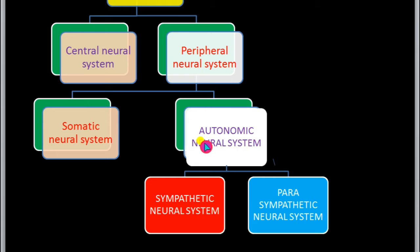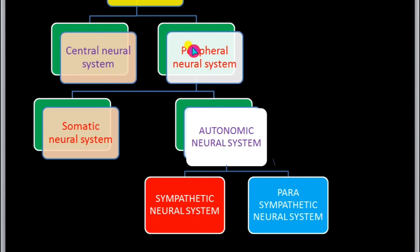As the name itself suggests, the autonomic neural system — 'auto' means self — is self-controlled, yet it is under the control of the central neural system through spinal nerves of the peripheral neural system. The autonomic neural system is divided into two types: the sympathetic neural system and the parasympathetic neural system.